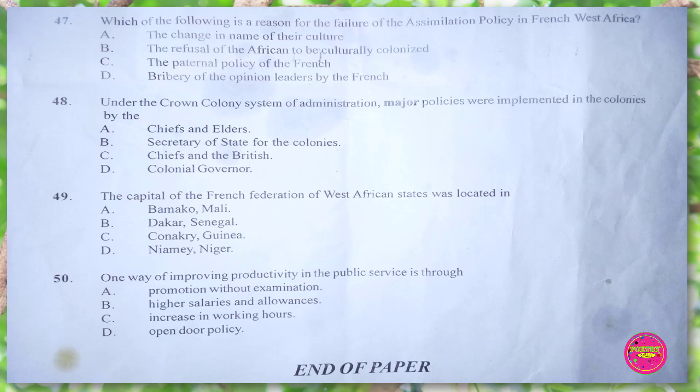Question 50. One way of improving productivity in the public service is through: A. promotion without examination, B. higher salaries and allowances. The correct answer is B. higher salaries and allowances. End of paper.